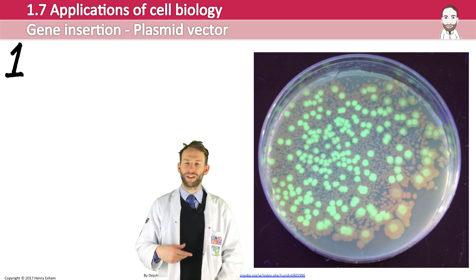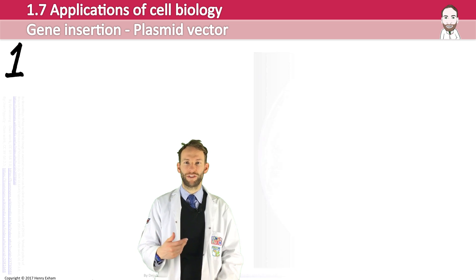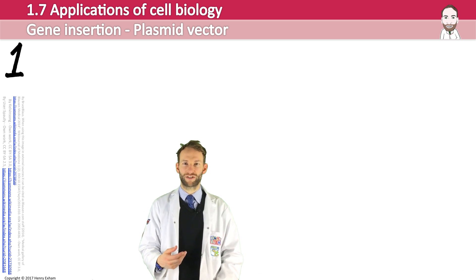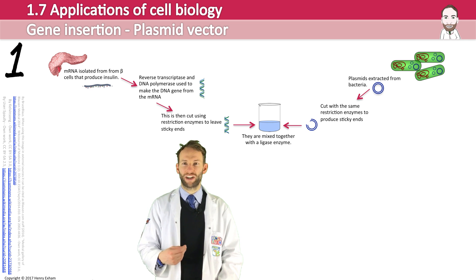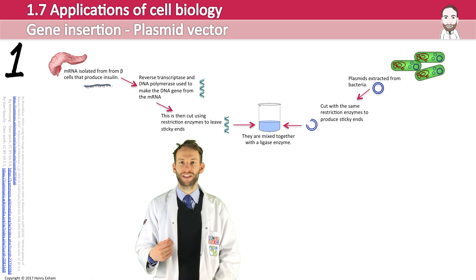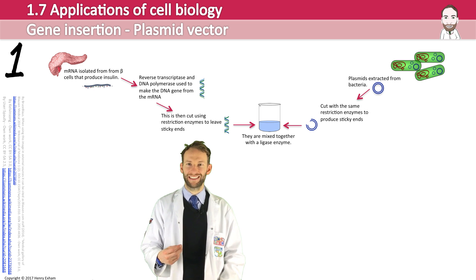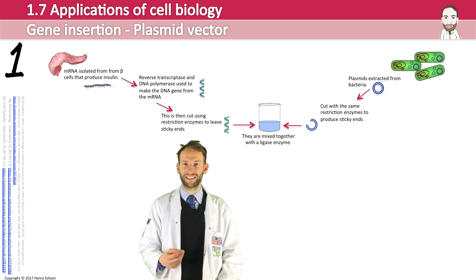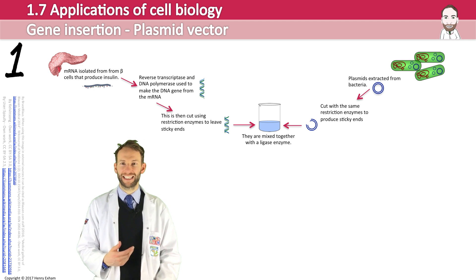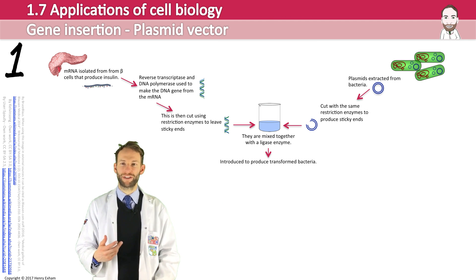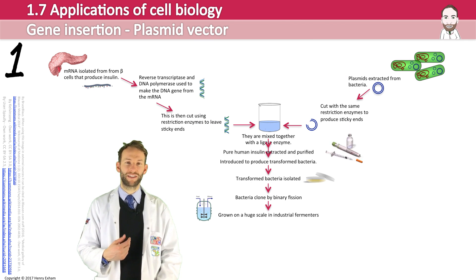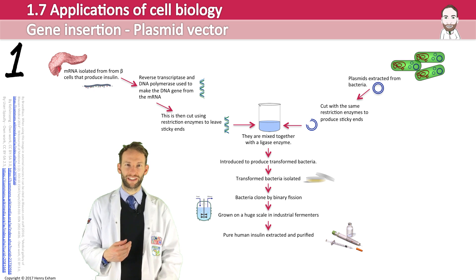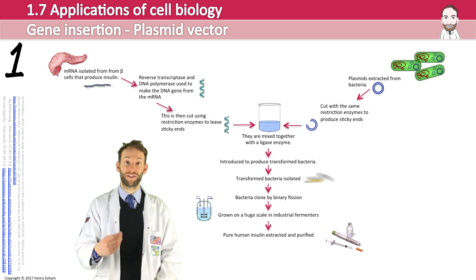An example of this is the production of human insulin. The gene is extracted from beta cells in the pancreas; a plasmid is taken and cut with restriction enzymes; they both have complementary sticky ends; they are combined and the transformed DNA gets isolated. Then they can be mass-produced in an industrial fermenter, the insulin extracted and purified, and used to treat diabetics. It's an amazing example of how genetic engineering can be used to help people.